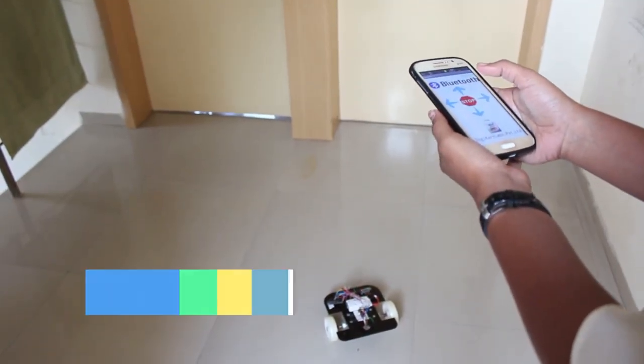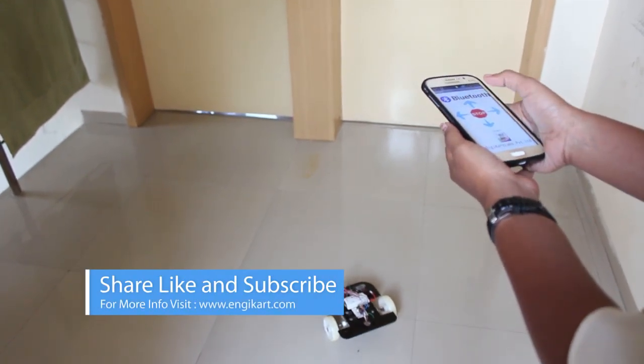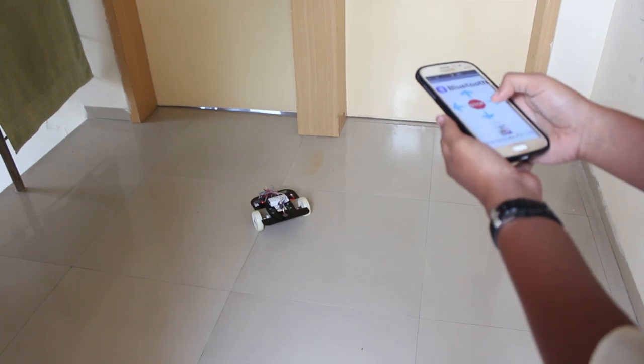This is a Bluetooth-based robot controlled by an Android application using Bluetooth. When I press the front button, it moves forward, and backward for the back button, similarly left and then right.